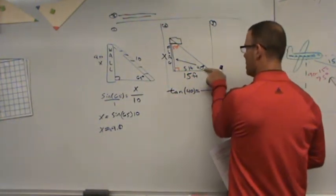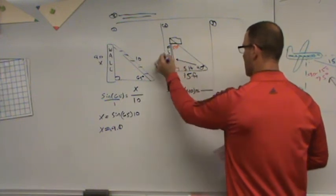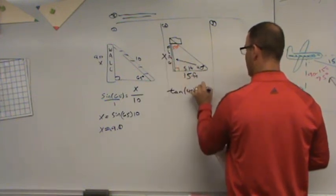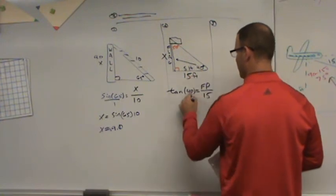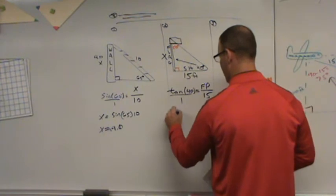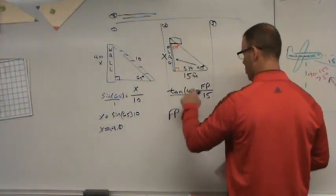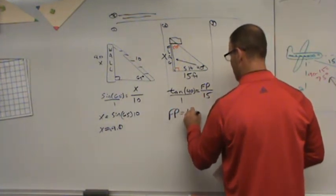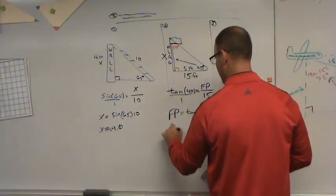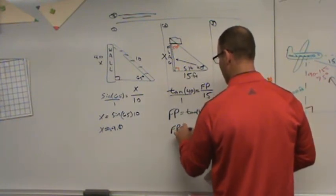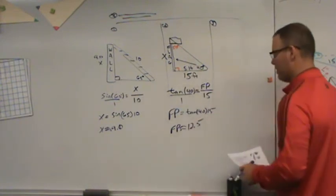The tangent of 40 is equal to the flagpole over the shadow, 15 feet. FP being what I want to know. So if I multiply straight across, the flagpole is equal to the tangent of 40 times 15, which the flagpole ends up being approximately 12.5 feet.